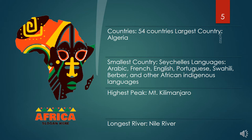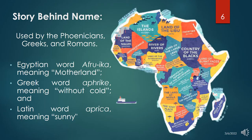The highest peak is Mount Kilimanjaro and the longest river in the continent is the Nile River. The origin of the name Africa is greatly disputed by scholars. Most believe it stems from words used by the Phoenicians, Greeks, and Romans. Important words include the Egyptian word 'Afroike,' meaning motherland; the Greek word 'Afroike,' meaning without cold; and the Latin word 'Africa,' meaning sunny.